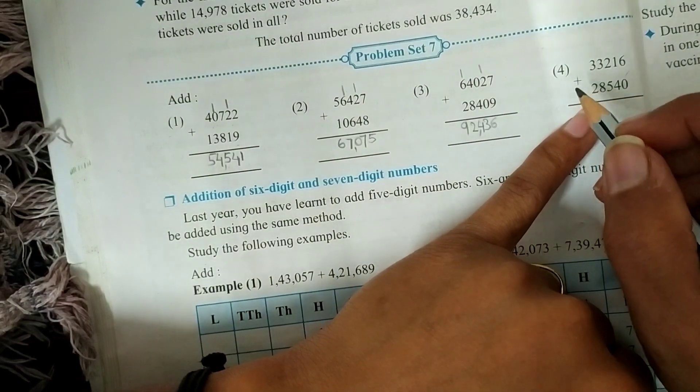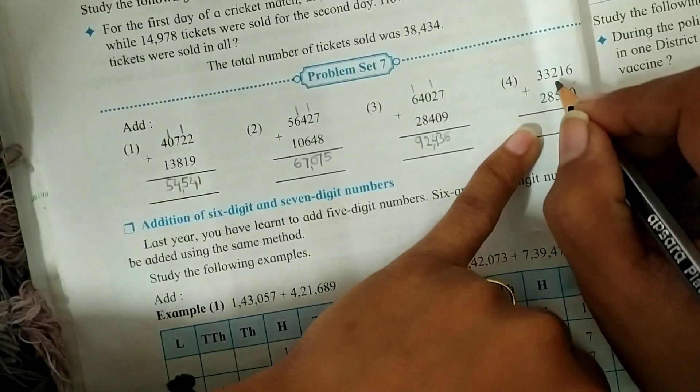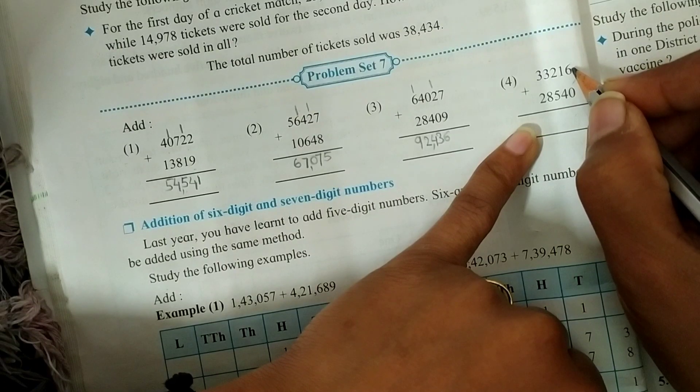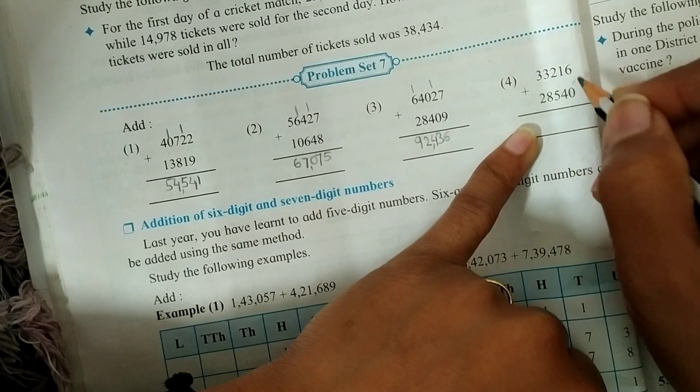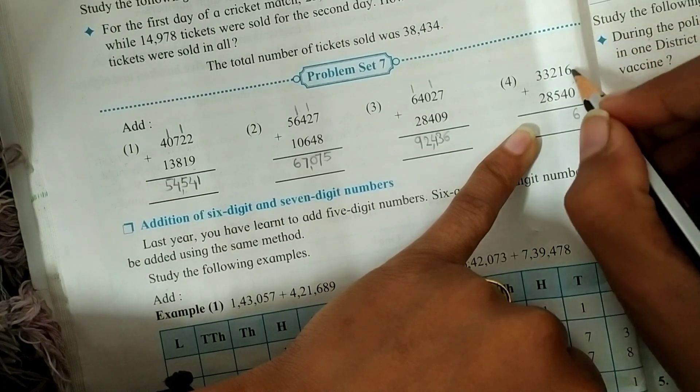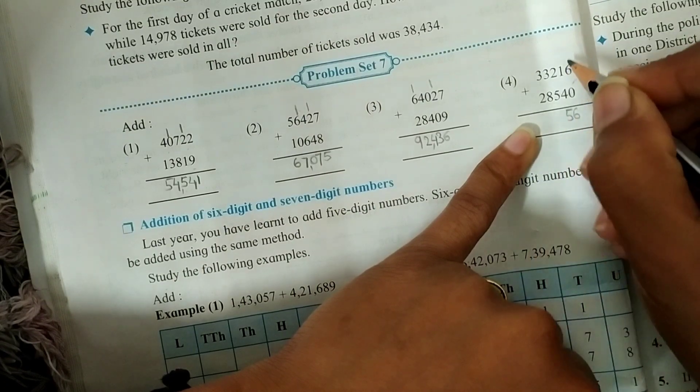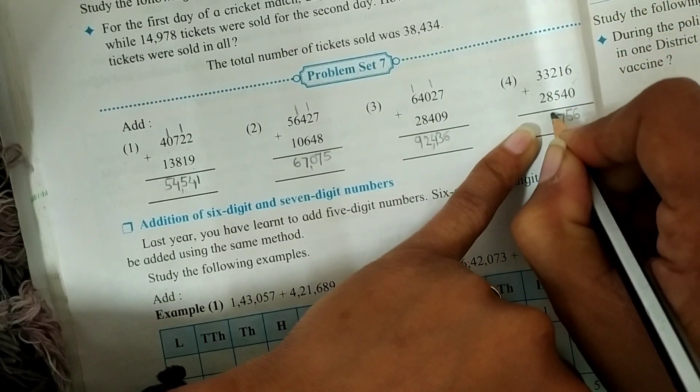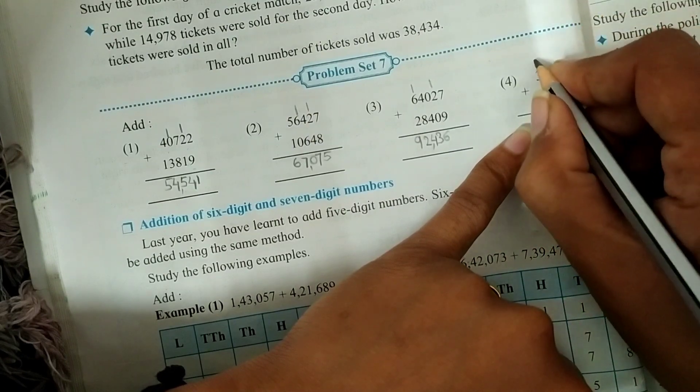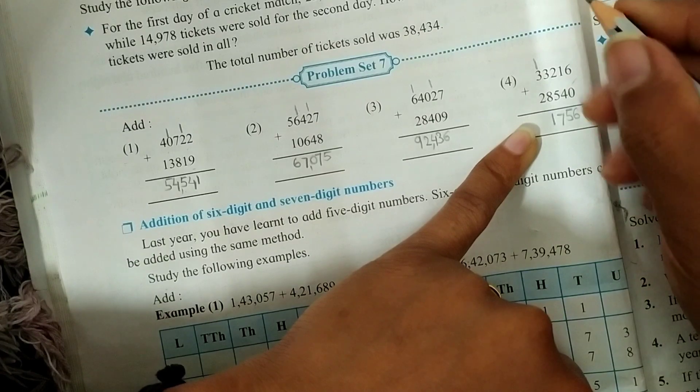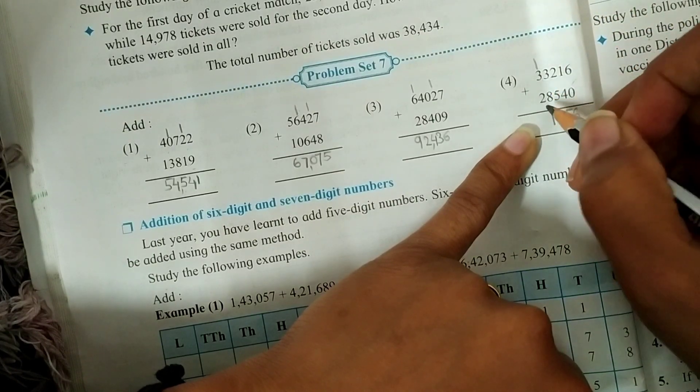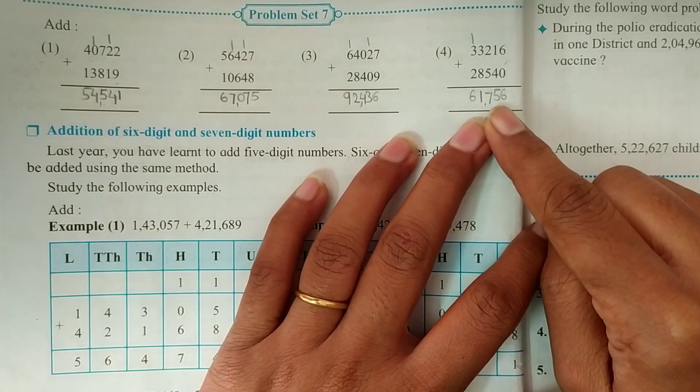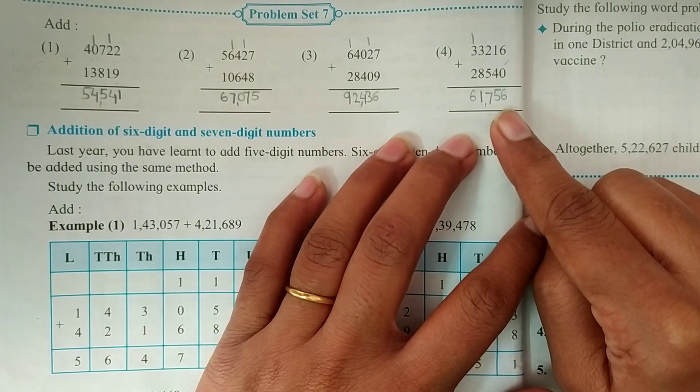The fourth question in this problem set is 33,216 plus 28,540. Start from units place. 6 plus 0, the number we get is 6. 1 plus 4 is 5. 2 plus 5 is 7. 3 plus 8, the number we get is 11. So we write 1 here and carry 1 on the upper side of next 3. So 3 plus 2 is 5, and plus carried 1 is 6. So for the fourth question, our answer is 61,756.